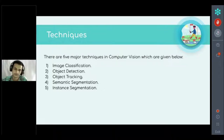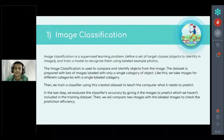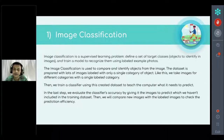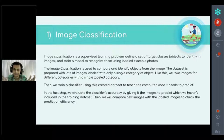Now heading towards image classification. Image classification is a technique through which we can input an image into the computer and it will recognize what the object is — whether it is a human, a cat, a dog, a car, or a vehicle. To do image classification, we take many images of a vehicle, for example, from different angles and perspectives.